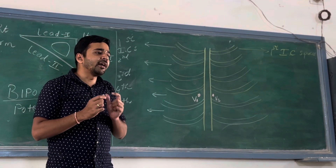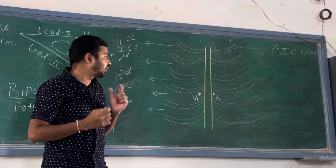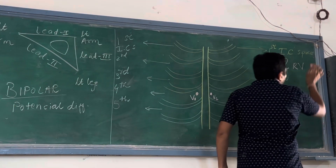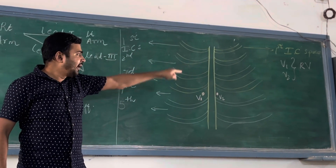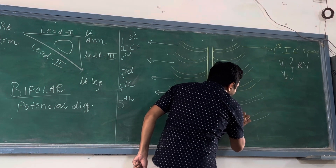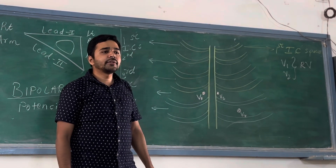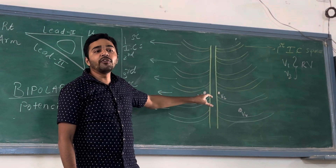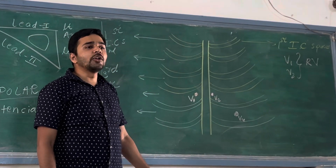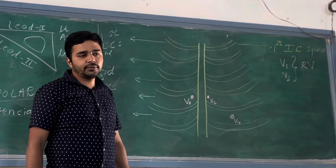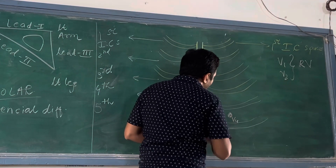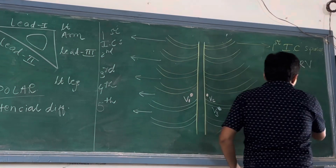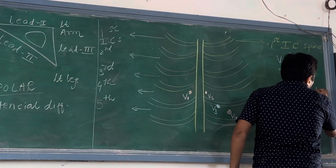V1 and V2 will measure the current from the right ventricle. V4 is placed on the apex, on the mid-clavicular line, below the nipple — approximately three and a half inches away from the mid-sternum line. V3 is placed between V2 and V4. V3 and V4 will give the idea of the septum.